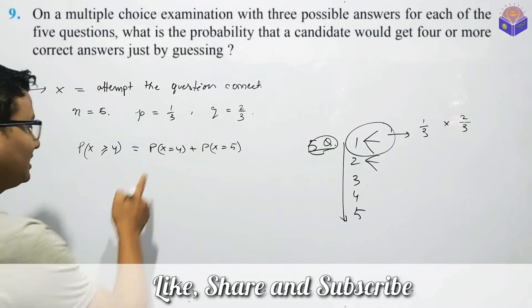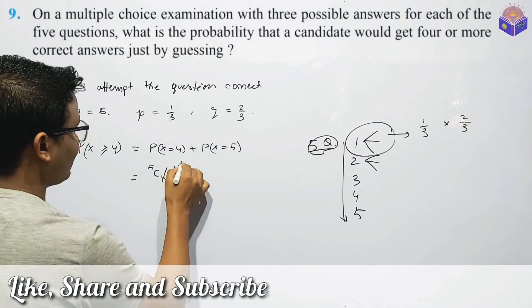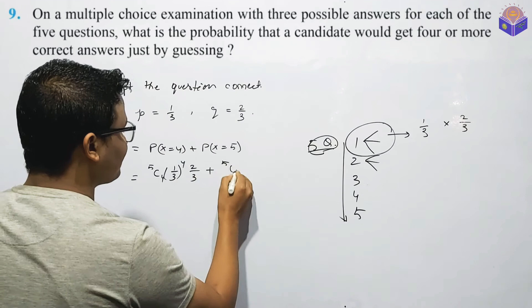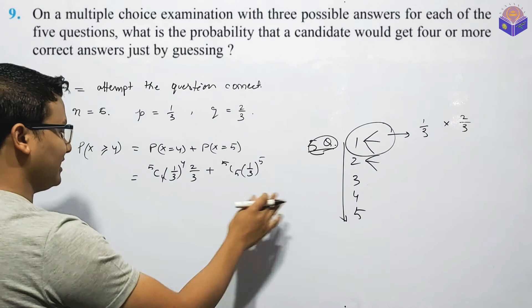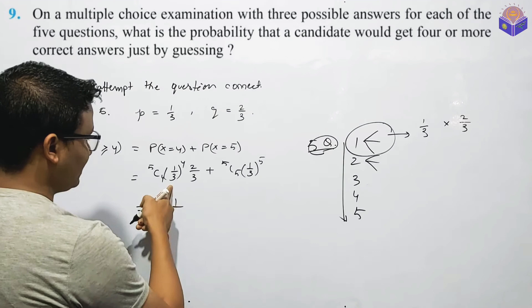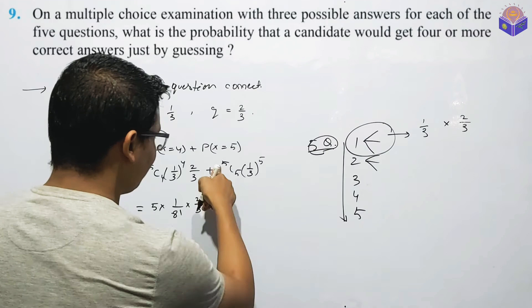If you look at the number of trials, target 2 by 3. This is the power of 5 minus 4, 1 plus 5C5, and 1 by 3 to the power of 5 and Q to the power of 1. This is 5C5 to the power of 5. 5C4 to the power of 5, 5C1 to the power of 5. Now, this is 1 by 3 — 3, 9, 9, 9, 81 — into 2 by 3 plus 5C5.